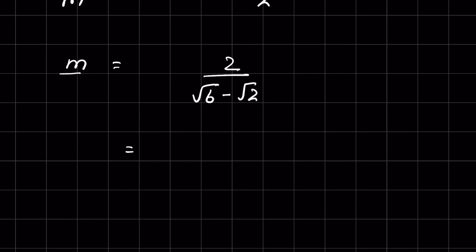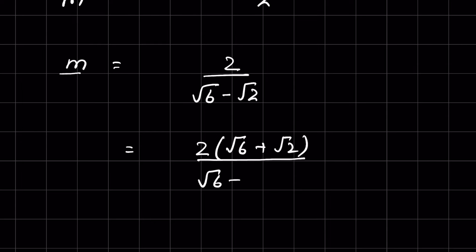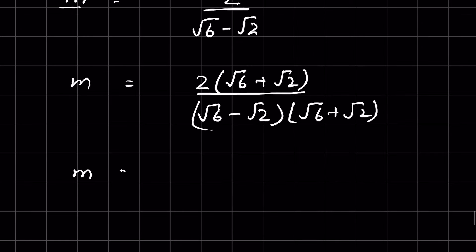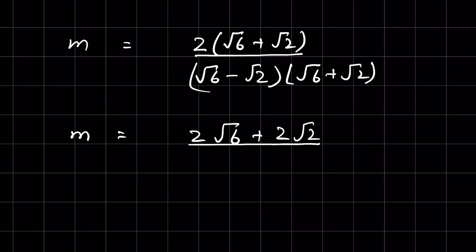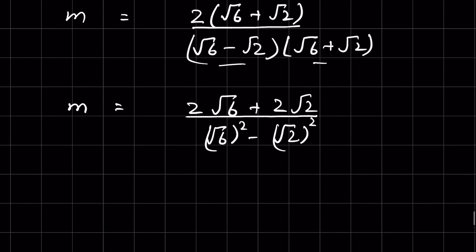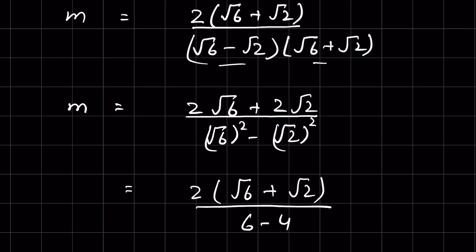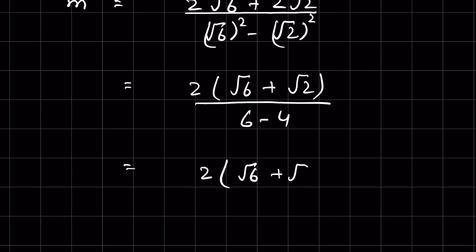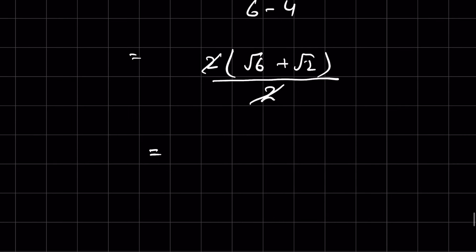So 1 upon m equals square root of 6 minus square root of 2 upon 2, or m equals 2 upon square root of 6 minus square root of 2. Now we rationalize: 2 times square root of 6 plus square root of 2, upon square root of 6 minus square root of 2 times square root of 6 plus square root of 2. This gives 2 times square root of 6 plus square root of 2 upon square root of 6 squared minus square root of 2 squared, which is 6 minus 2 equals 2. So 2 and 2 cancel, and the final answer is square root of 6 plus square root of 2.